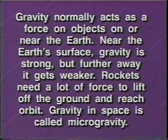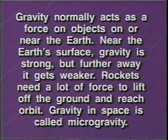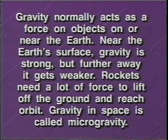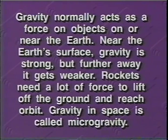Gravity is the force of attraction or pull between any two pieces of matter. Near the Earth's surface, the force of gravity is strong, but as an object gets further away, the force becomes much smaller. A rocket needs a great deal of force to lift off the ground and accelerate fast enough to reach an orbit around the Earth. While in orbit, gravity is still exerting a force on the rocket — the speed of the rocket and the force of gravity cause it to orbit the Earth in a curved line. The gravity experienced on the shuttle while in orbit is far less than on the surface of the Earth and is termed microgravity, because the shuttle travels in a curved path as if it were continually falling in a circular path around the Earth.